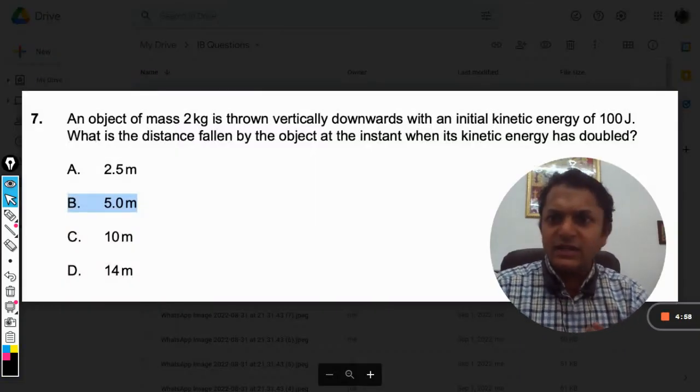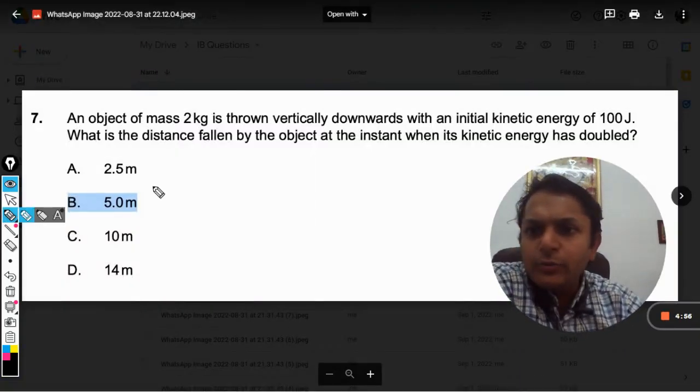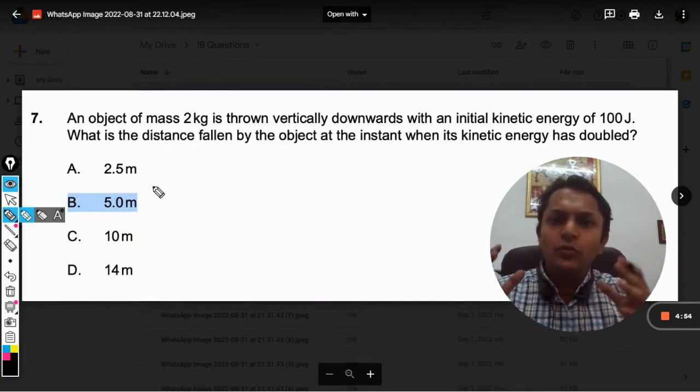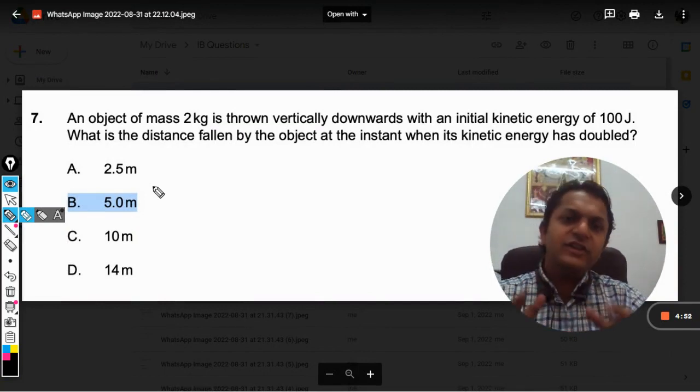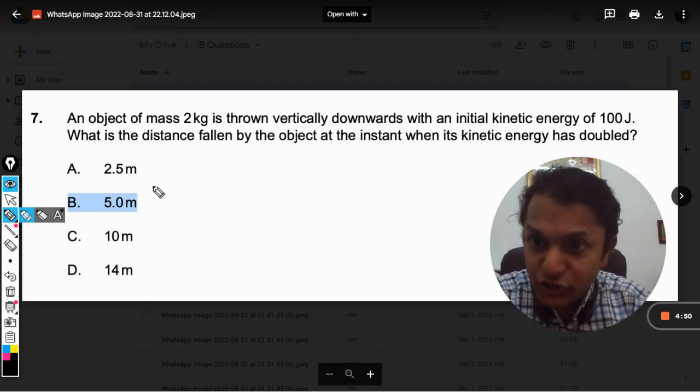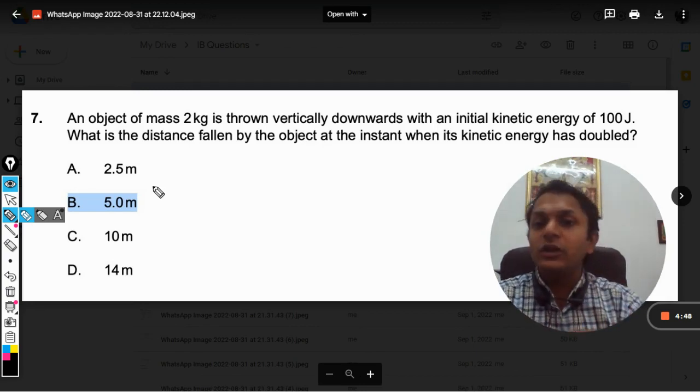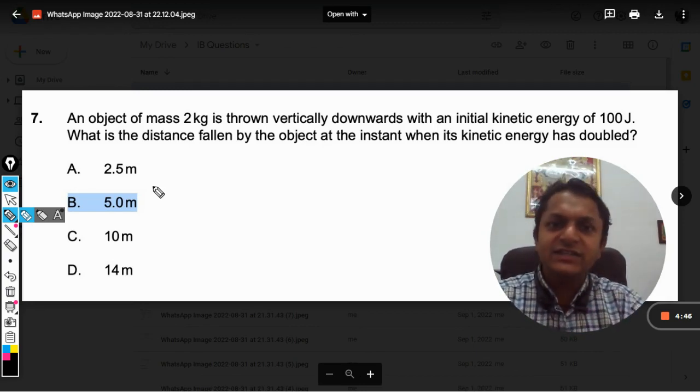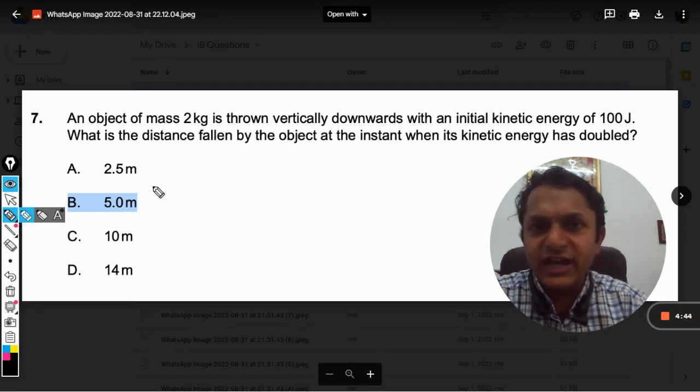Okay dear students, let us read this question. An object of mass 2 kg is thrown vertically downwards with an initial kinetic energy of 100 joule. What is the distance fallen by the object at the instant when its kinetic energy has doubled?